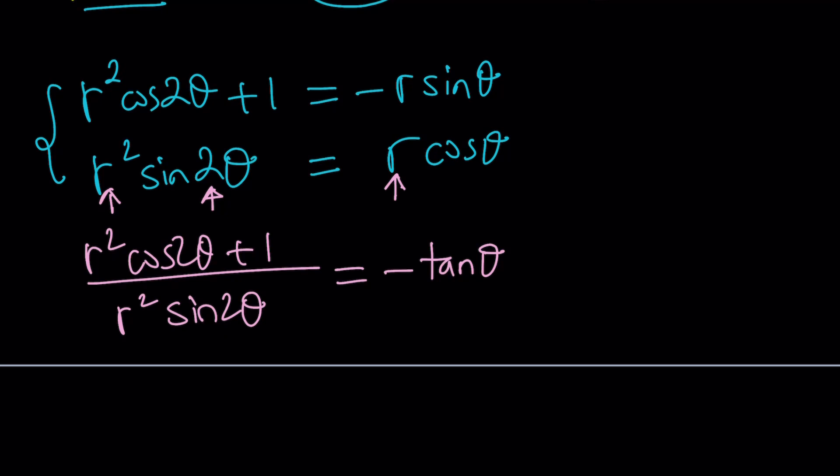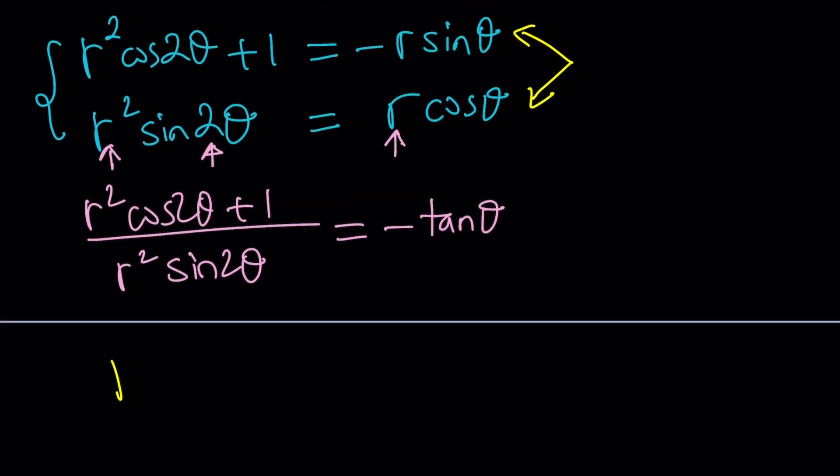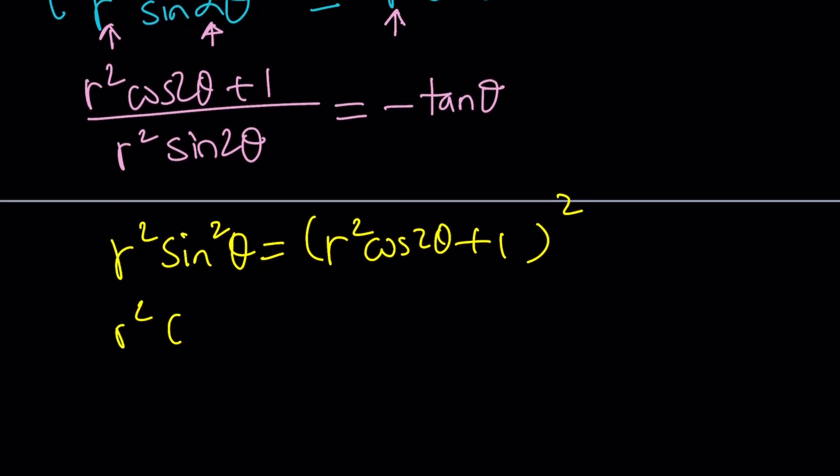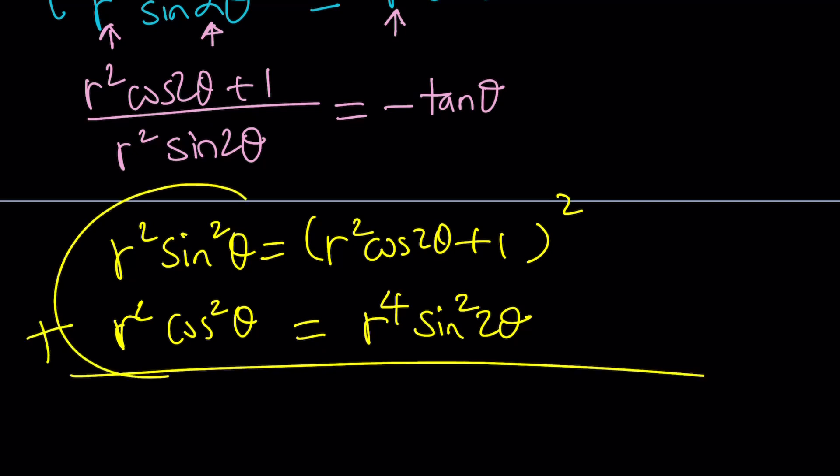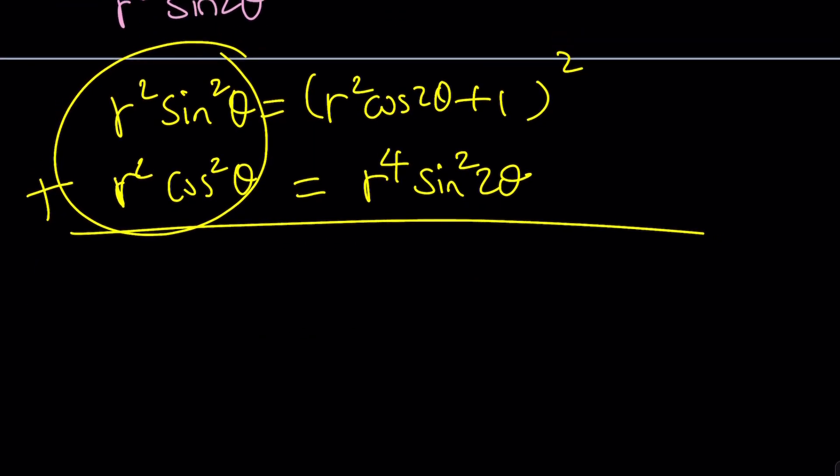Another idea that I have is because of the presence of sine and cosine, squaring both sides of these equations. So if you square the top equation, you're going to get R² sine² θ, which gives you (R² cosine 2θ + 1)². And if you square the bottom equation, you get R² cosine² θ, and then R⁴ sine² 2θ.